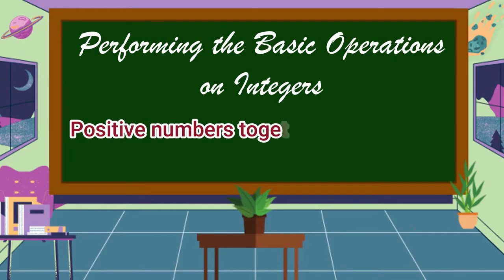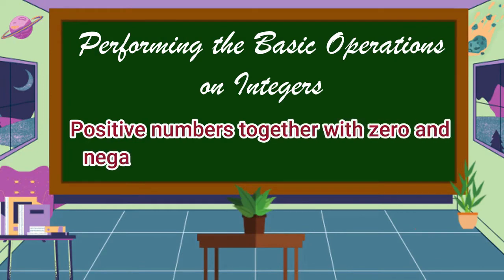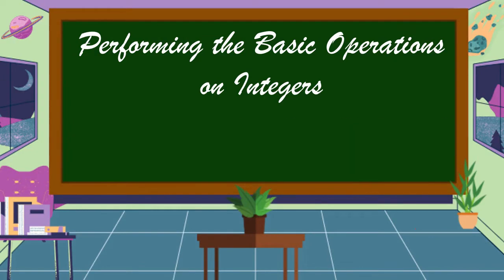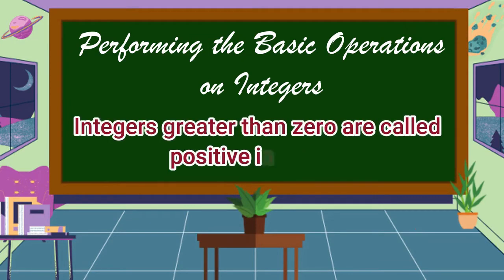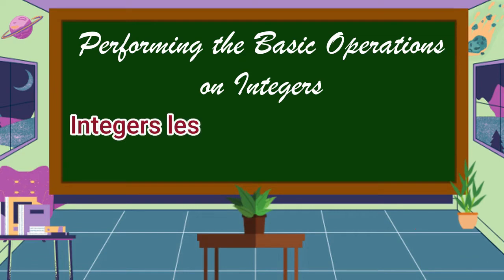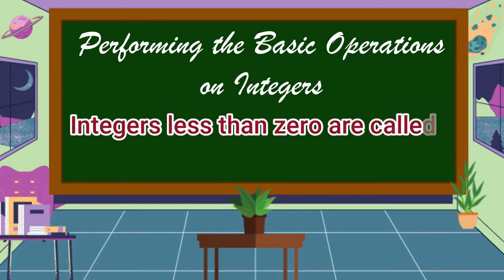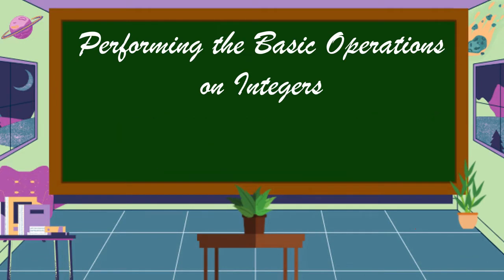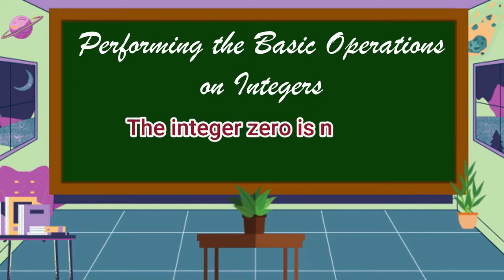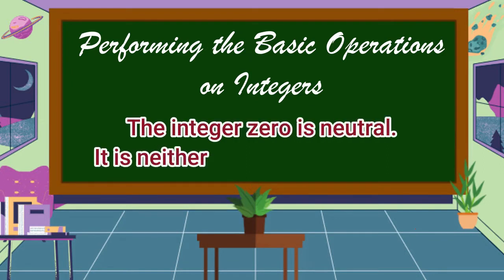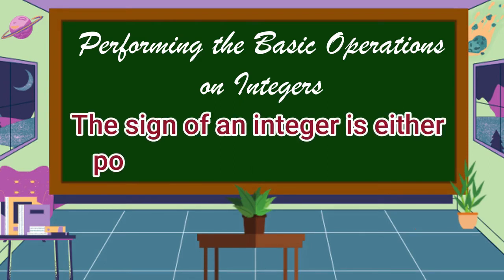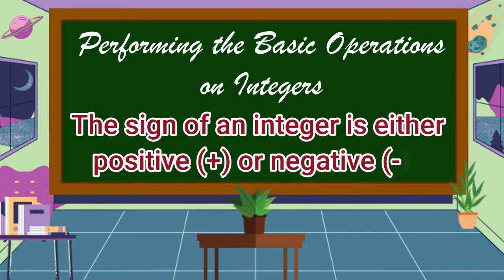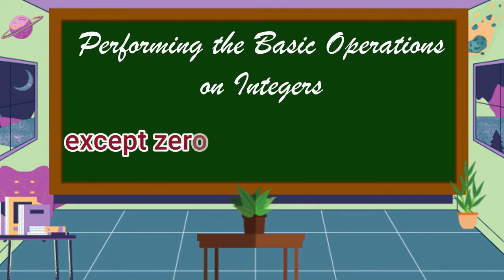Positive numbers together with zero and negative numbers are called integers. Integers greater than zero are called positive integers. Integers less than zero are called negative integers. The integer zero is neutral — it is neither positive nor negative. The sign of an integer is either positive or negative, except zero which has no sign.